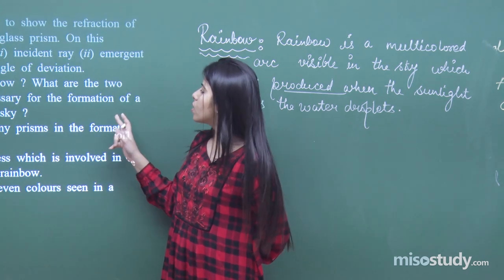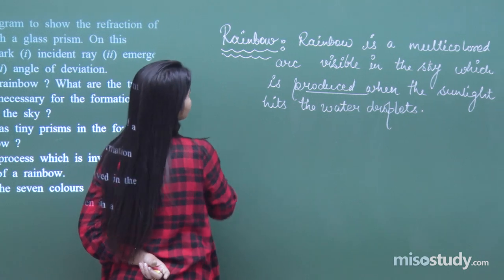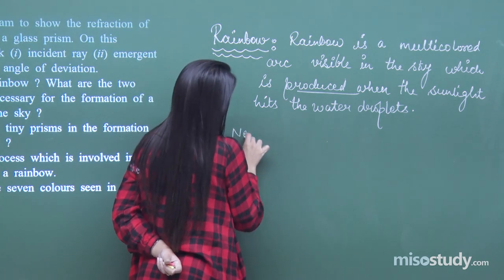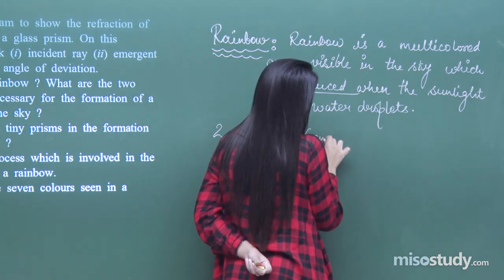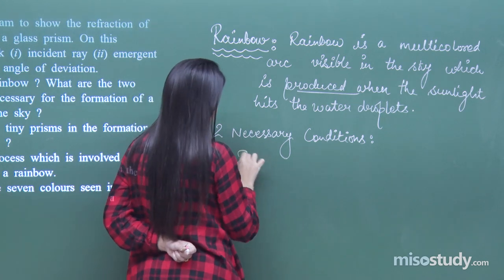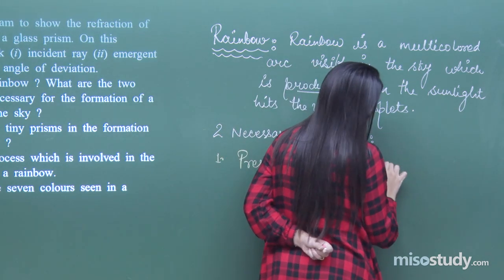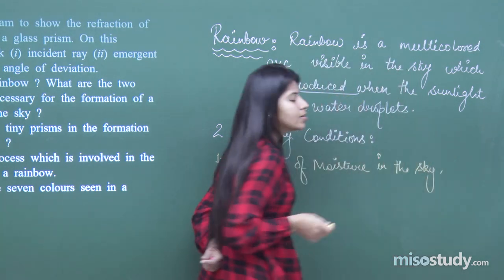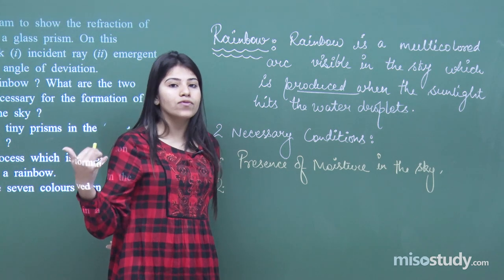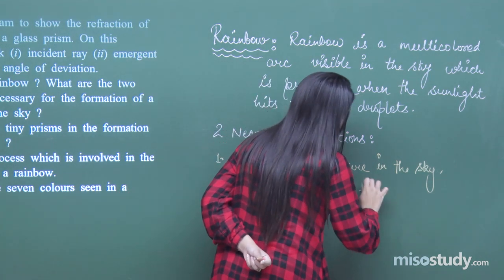The two conditions necessary for the formation of a rainbow in the sky are: first, the presence of moisture in the sky; and second, the presence of sunlight, but the sun should be at the opposite side — that is, the sun should be at the back of the observer.